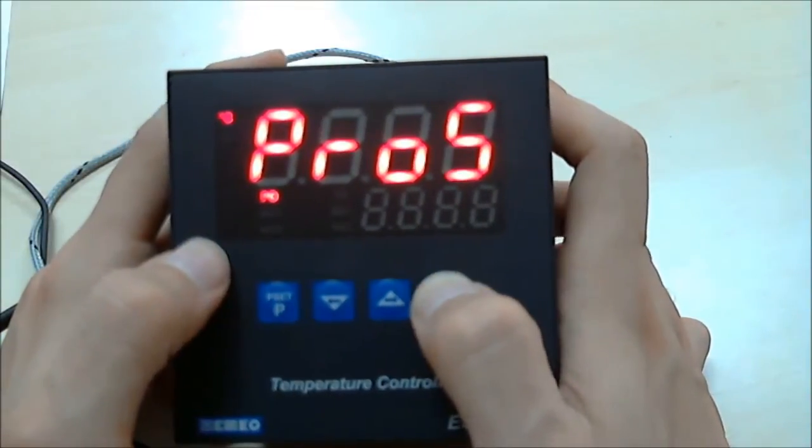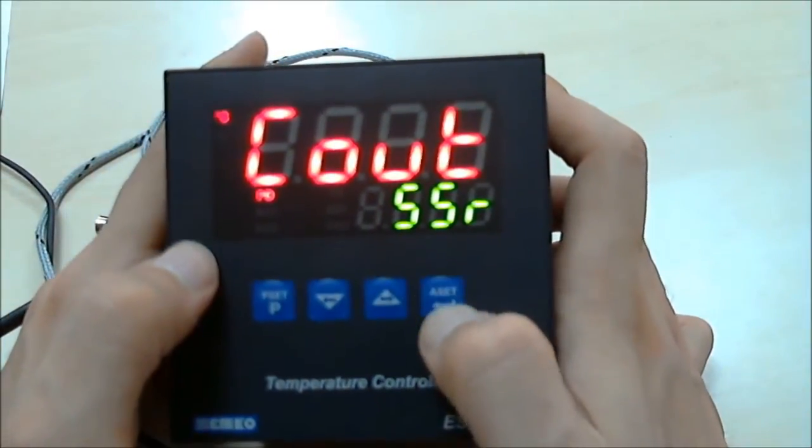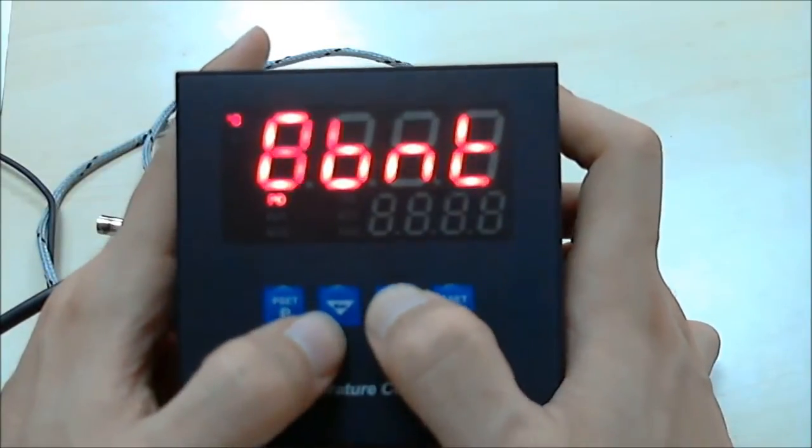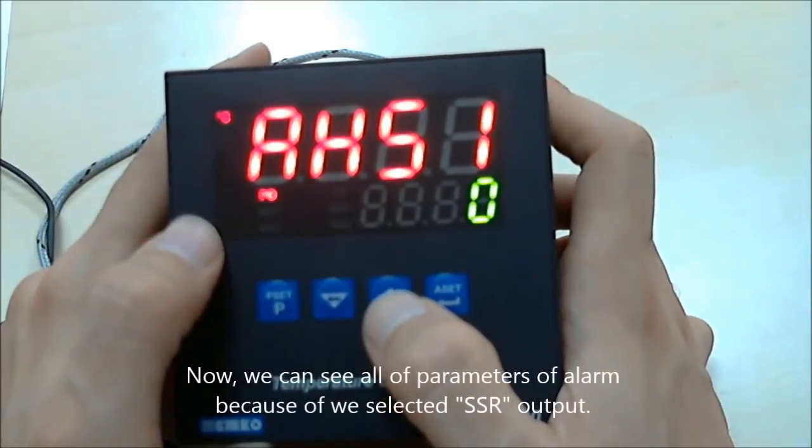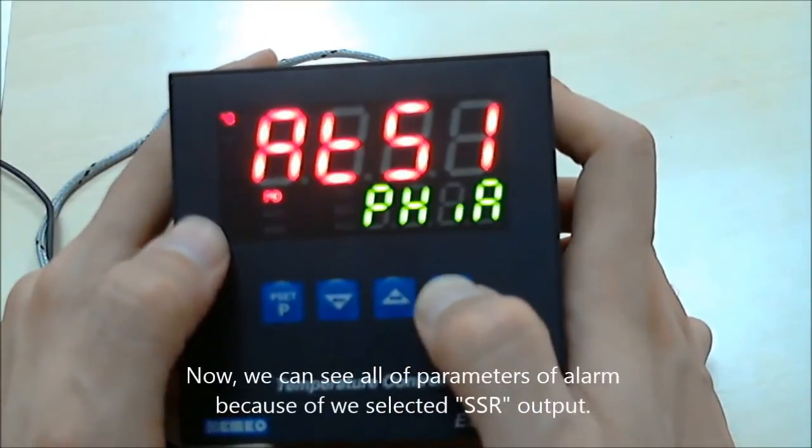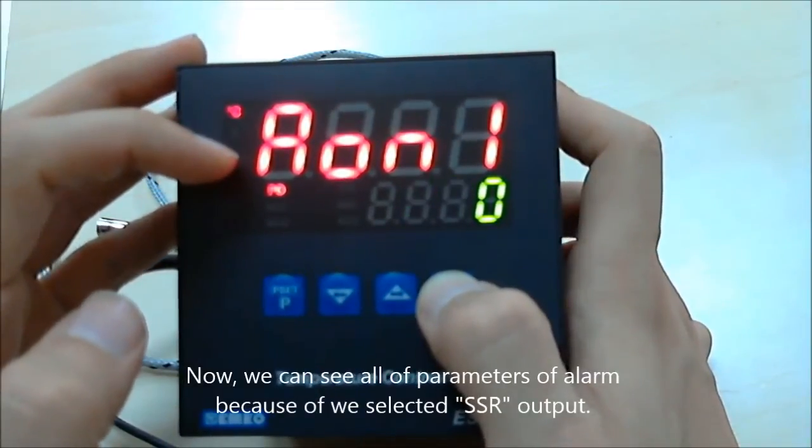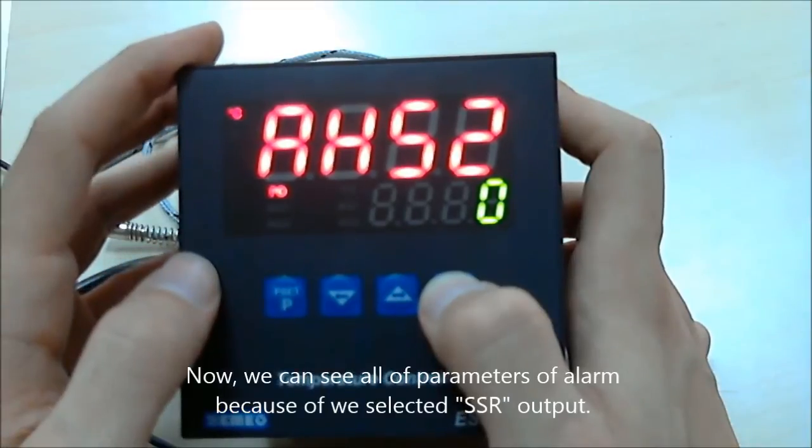But if you select SSR output control, press enter button and go to alarm parameters. You can see alarm 1 values and also alarm 2 values.